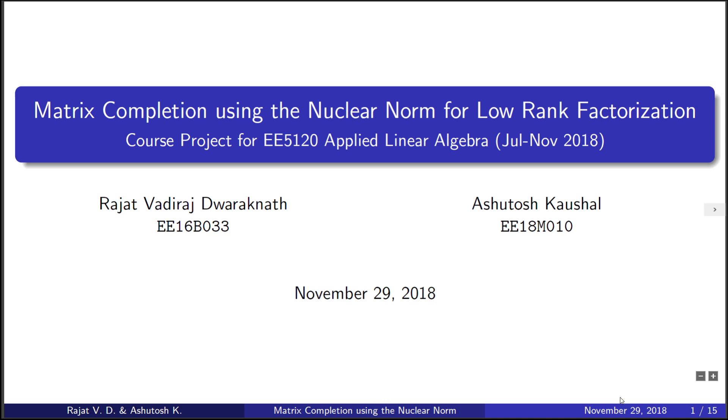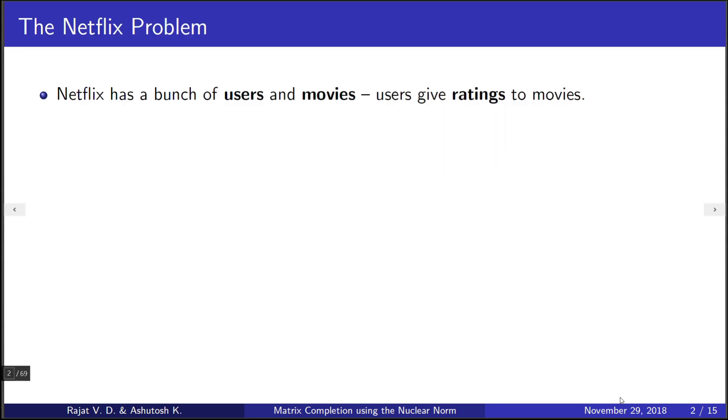Hello everyone. In this video, we're going to use the nuclear norm and low-rank factorization to solve matrix completion. Consider the Netflix problem: users of Netflix give ratings to its movies. Our goal is to build a recommendation system that would predict what rating a user would give to a movie that they haven't watched.